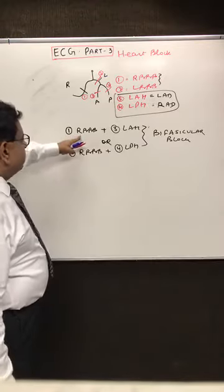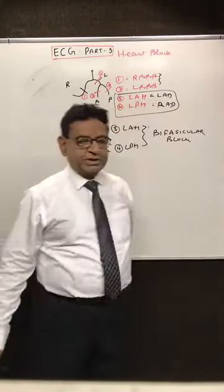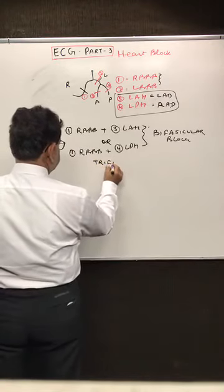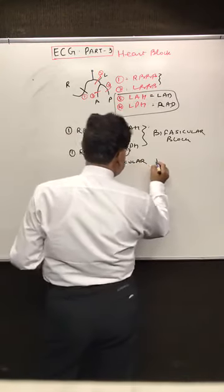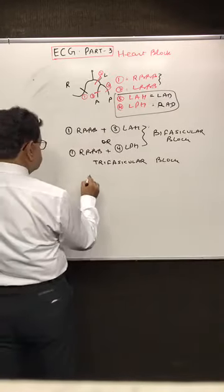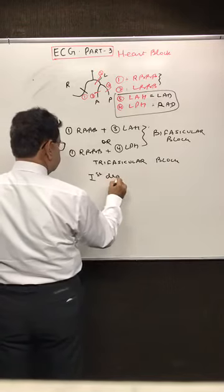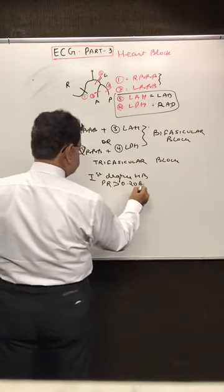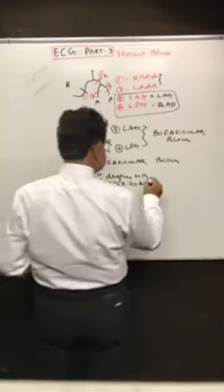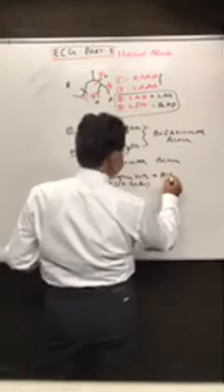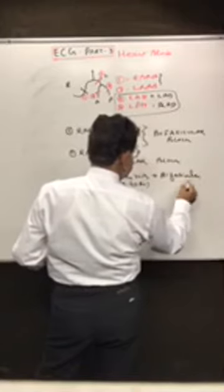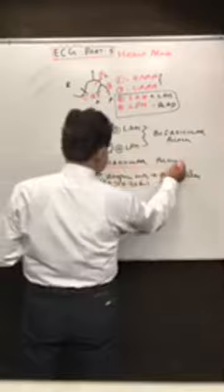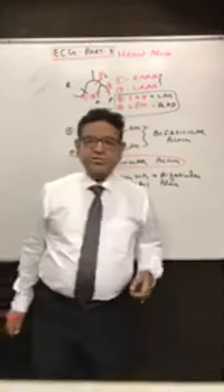Bi-fascicular block means right bundle branch block plus either left anterior hemiblock or left posterior hemiblock. Now, what is tri-fascicular block? Tri-fascicular block is first-degree heart block — meaning PR interval more than 0.20 seconds — plus a bi-fascicular block.